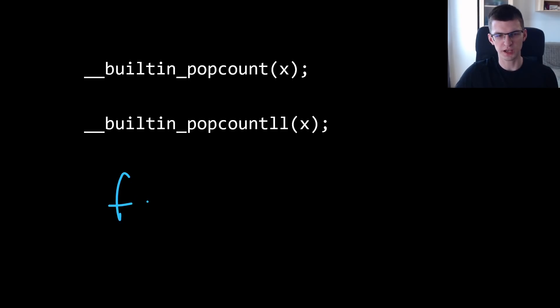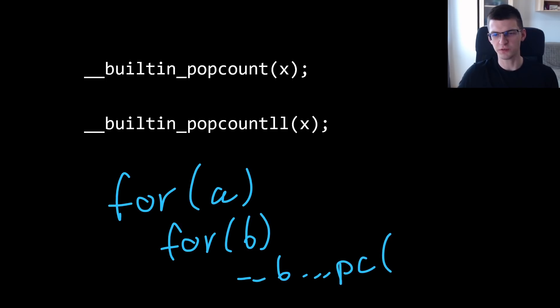The solution then becomes for every schedule A of one worker, for every B of some other worker, you need to consider this __builtin popcount of A and bitwise AND B and this operation works in constant time.